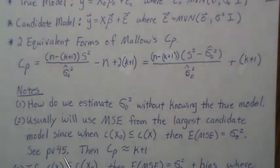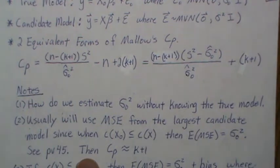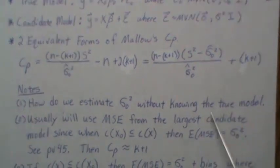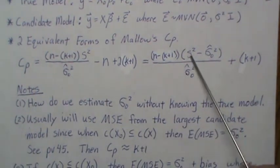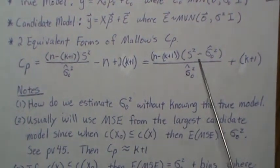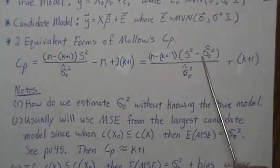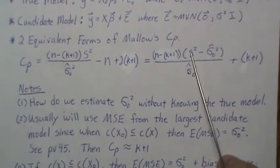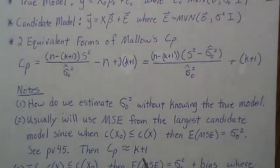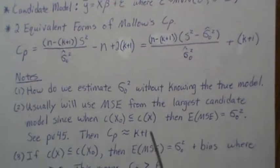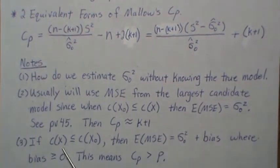If we find the mean square error of our candidate model that is close to the unbiased estimate of the true error variance, then this difference is going to be close to zero, which makes CP approximately equal to the number of beta parameters being estimated. This is the case when we overfit.